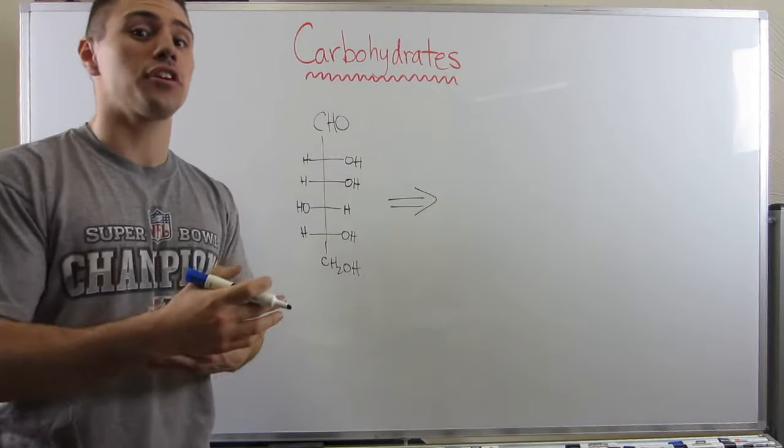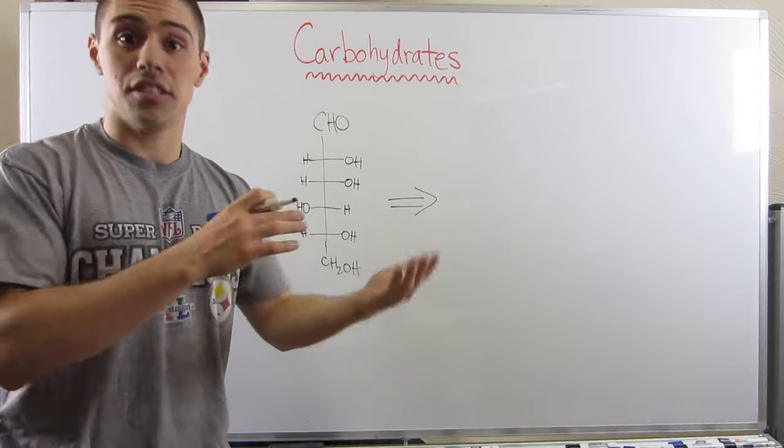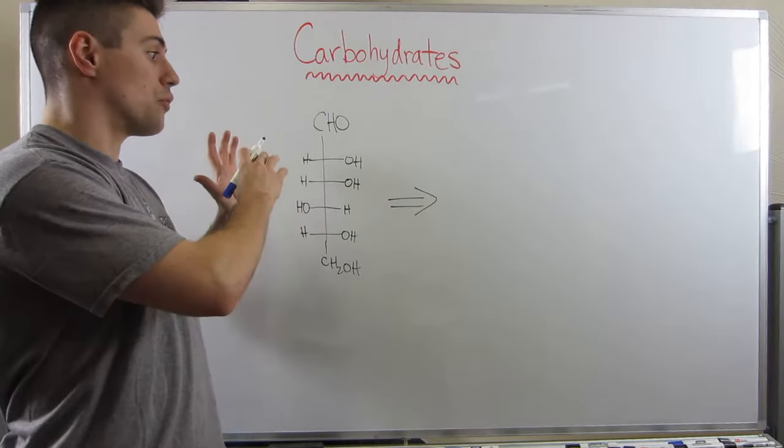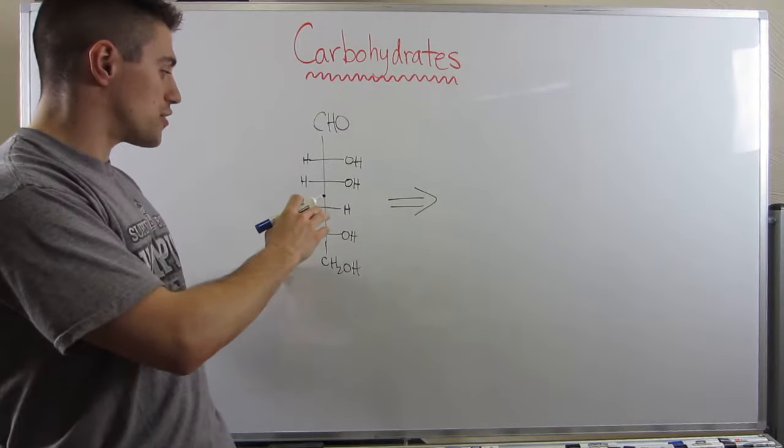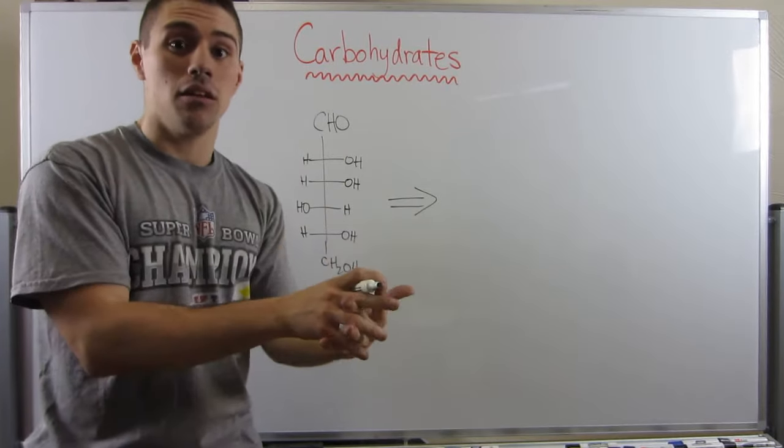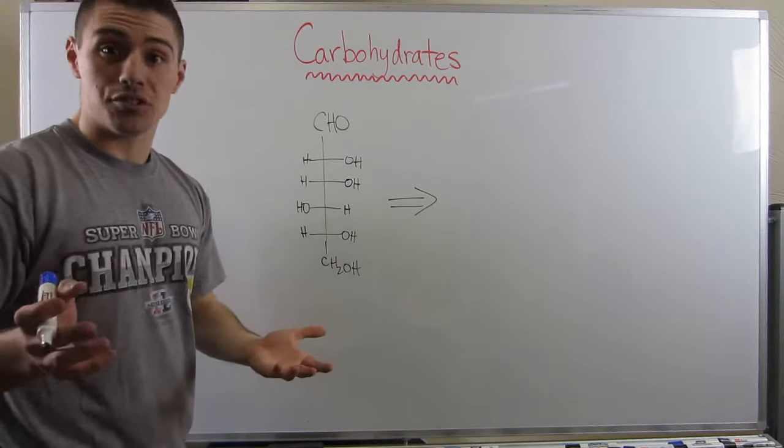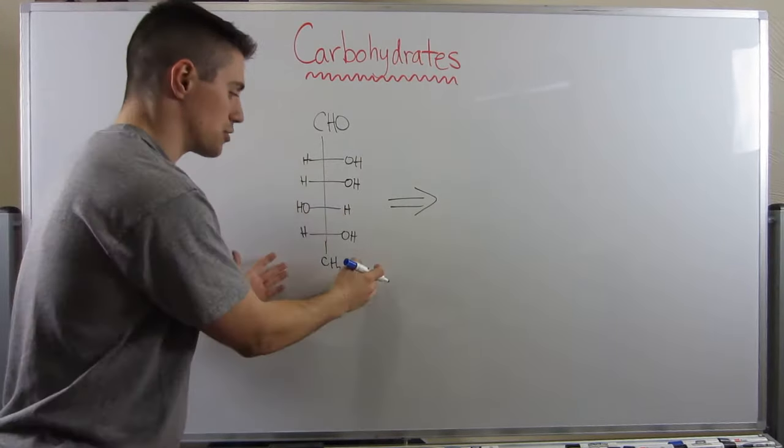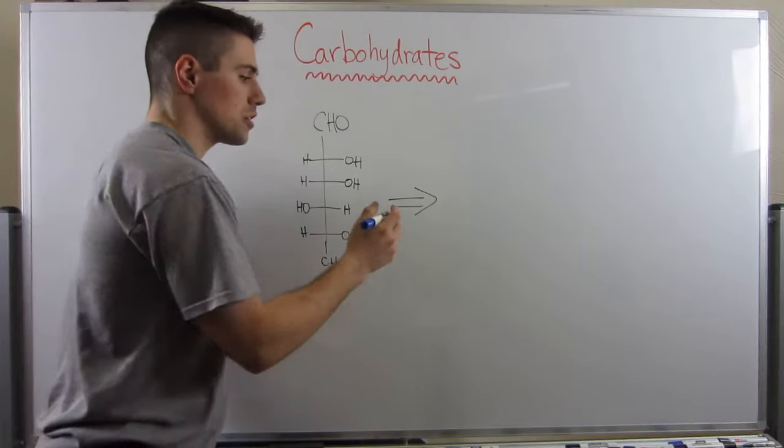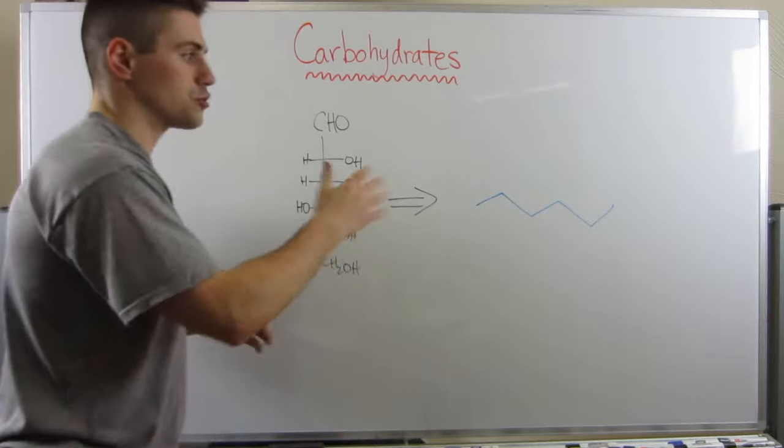Okay gang, so another thing you're going to have to do when dealing with carbohydrates, in addition to knowing how to go from the straight chain Fischer projections to closing the ring with making a hemiacetal and being able to draw a chair, one thing that is helpful to know is how to take a Fischer projection and just convert it to straight bond line structure like that.